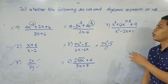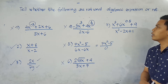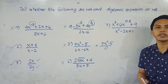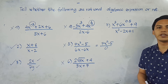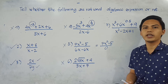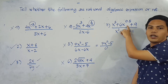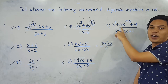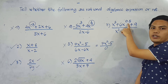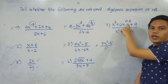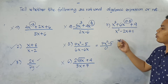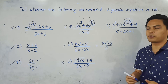Number 7 (last one): We have x cubed plus 6x raised to 0.5 plus 9, all over x squared minus 2x plus 1. Obviously, this is NOT a rational algebraic expression because, looking at the numerator, one of the variables has a decimal exponent, which is 0.5. Since the numerator is not a polynomial, the whole expression is not a rational algebraic expression.